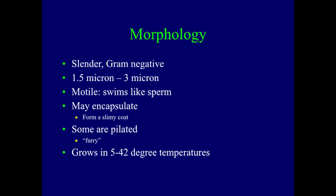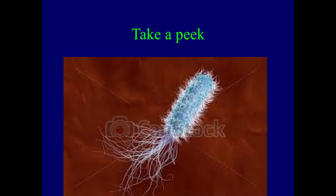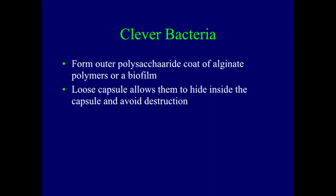Here's an artist's rendering showing the furry kind where there are many pili — a blue-green organism with long flagella at one end for movement, and pili sticking out everywhere that allow it to attach to mucosa and start causing damage. It's a clever bacteria. It forms an outer polysaccharide coat of alginate — and we call that a biofilm. It's produced by the bacteria, forming a film of slime on top of it, and that capsule allows them to hide inside and avoid destruction.